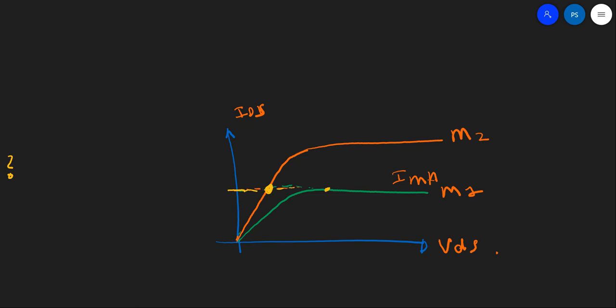Now graphically it can be shown that for M2 to have the same current, if you want the M2 to have same current, it must have higher VGS. So this curve must be something like this. Only then it can sustain the current. This can also be shown graphically.